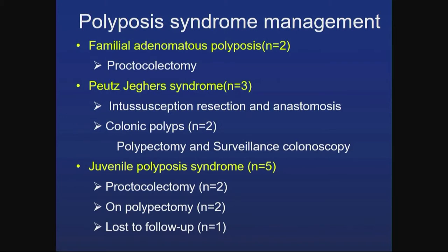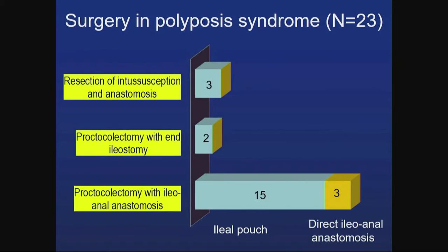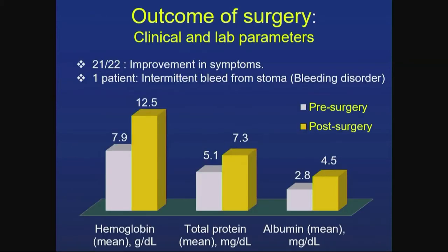Among juvenile polyposis syndrome — 5 patients — two underwent proctocolectomy and two were started on polypectomies who are still not eradicated. Overall, among 23 polyposis syndrome surgical patients, proctocolectomy with ileo-anal anastomosis was done in 18, two underwent proctocolectomy with end ileostomy, and three Peutz-Jeghers syndrome patients had resection and anastomosis. Among the 18 ileo-anal anastomosis patients, an ileo-anal pouch was formed in 15 and direct ileo-anal anastomosis was done in 3. Surgical outcomes were excellent — 22 out of 23 had improvement in symptoms with rise in hemoglobin, total protein, and albumin. One patient who did not improve had an underlying bleeding disorder.